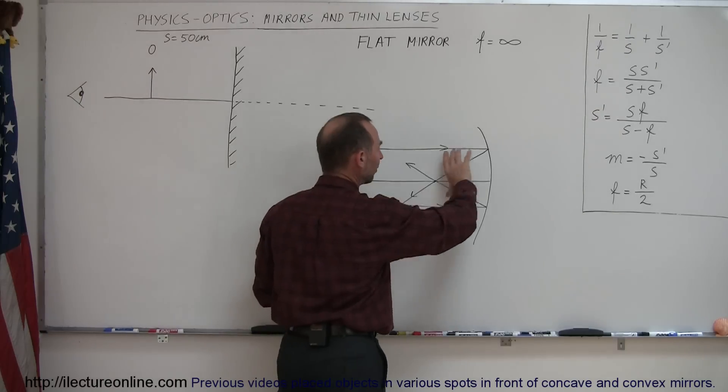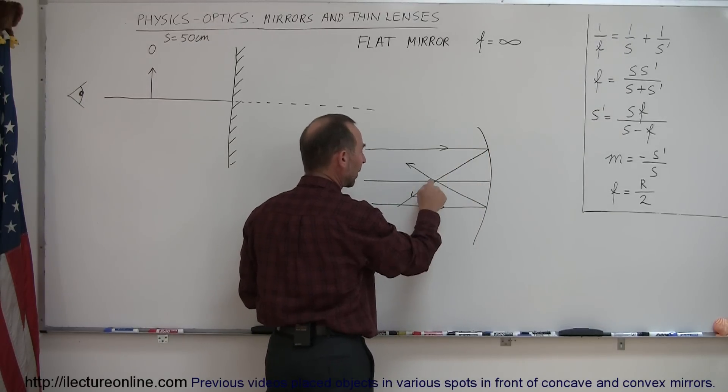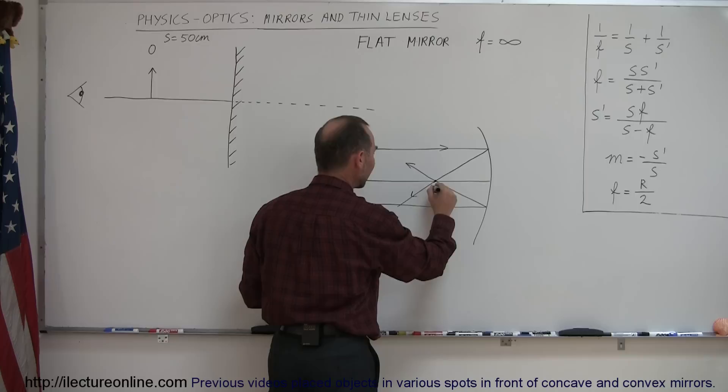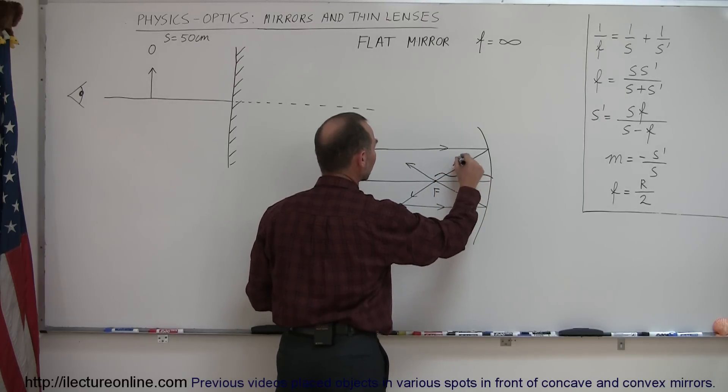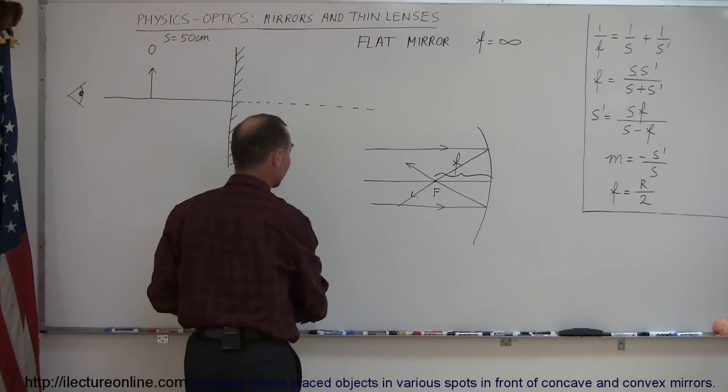All you do is shine light parallel to the normal to the mirror and when all the rays reflect back through a central point right there, that is the focal point and the distance from the focal point to the mirror is known as the focal length. So, with a flat mirror, that's a little bit different.